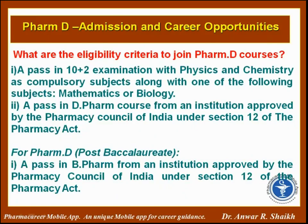What are the eligibility criteria to join PharmD courses? A pass in 10+2 examination with Physics and Chemistry as compulsory subjects along with one of the following: Mathematics or Biology, and a pass in D-Pharm from an institution approved by the Pharmacy Council of India. For PharmD Post Baccalaureate, a pass in B-Pharm from an institution approved by the Pharmacy Council of India is required.